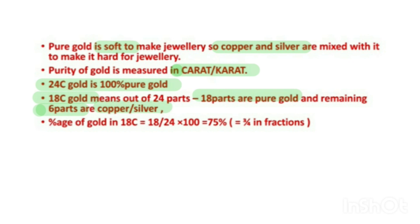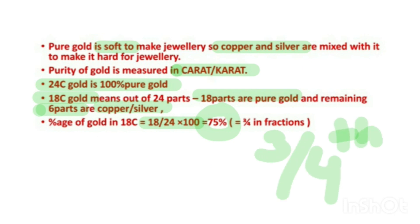To find the percentage of pure gold in 18 carat gold, we divide 18 by 24 and multiply by 100, which gives us 75%, or three-fourths of the total. So in 18 carat gold, only 75% is pure gold, and the remaining 25% — or one-fourth — is either copper or silver.